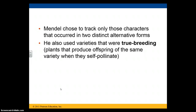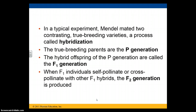He also used varieties that are true breeding plants — plants that are homozygous, or plants that produce offspring of the same variety when they self-pollinate. If pollen from a flower falls onto the carpel of the same flower and the result is a flower of the same color, that's a true breeding plant. Typically, Mendel would take two true breeding varieties that were different and mate them — this is called hybridization. The P generation would be the true breeding plants, and the F1 generation would all be hybrids.